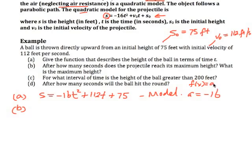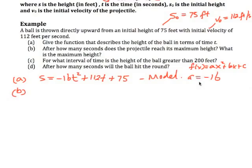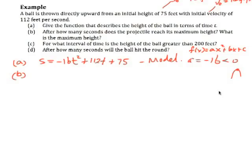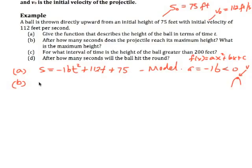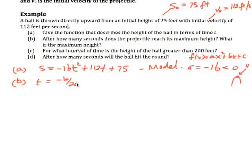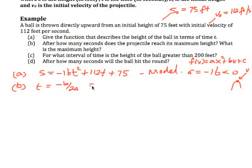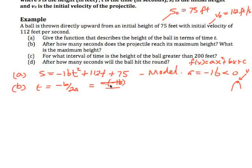Part b asks: after how many seconds does the projectile reach its maximum height? We can use our quadratic work to say the maximum height — notice that a is equal to negative 16. When we look at our function as at squared plus bt plus c, a is negative 16, which is less than 0, so it's opening downwards and we have a maximum point. Remember, that happens at the vertex.